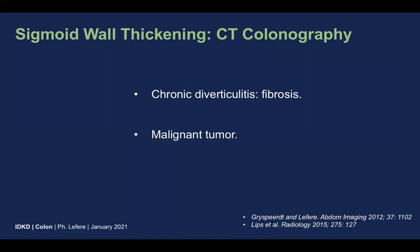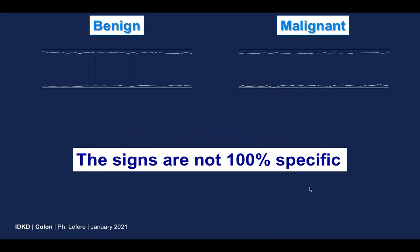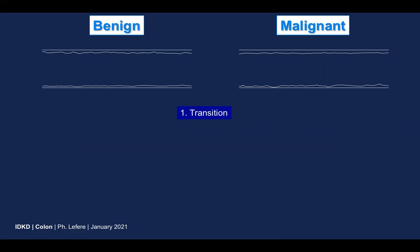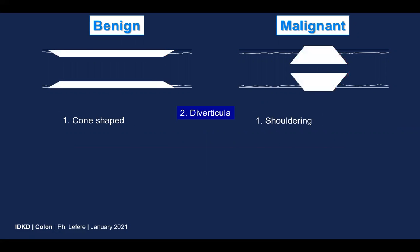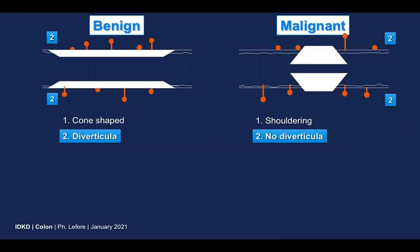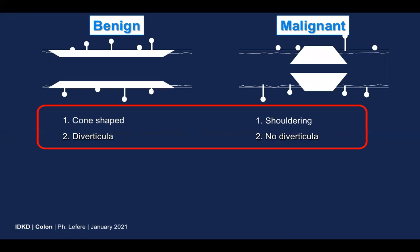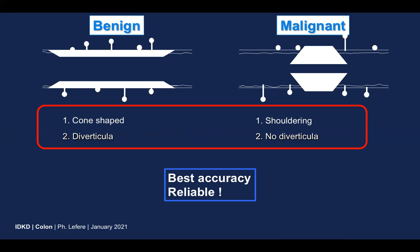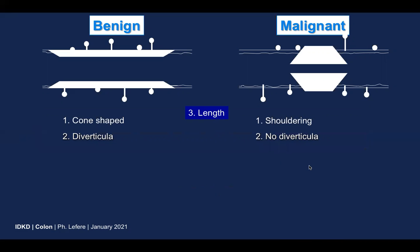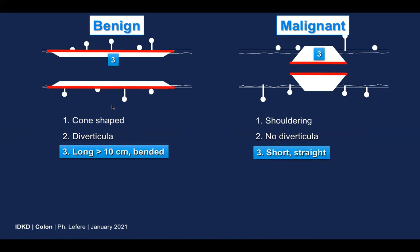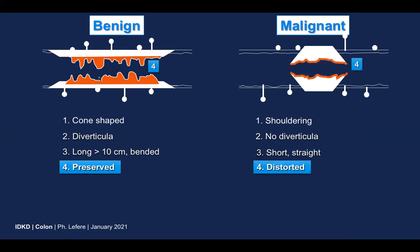I want to end with the differentiation on CT colonography between chronic diverticulitis and malignancy. This is not always easy, and we need to look at several signs, which are not 100% specific. Very important is the transition zone: cone-shaped versus shouldering. Presence of diverticula is also key — combining these signs gives the best diagnostic accuracy. Cone-shaped aspect with diverticula is most probably benign. Less specific signs include segment length — mostly long in benign disease, mostly short in malignant — and folds, which are mostly present in benign disease but distorted or absent in malignant disease.